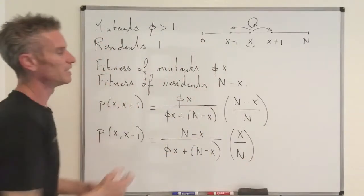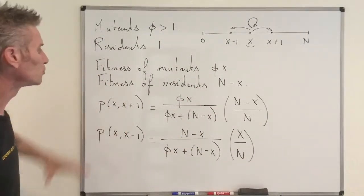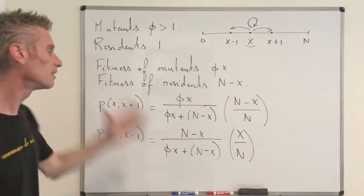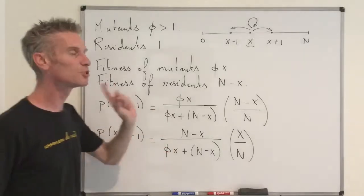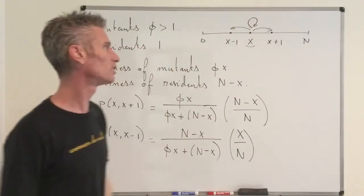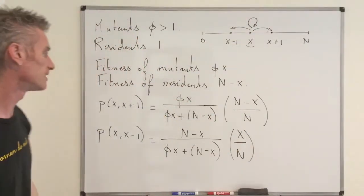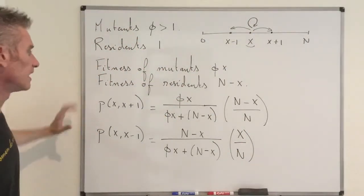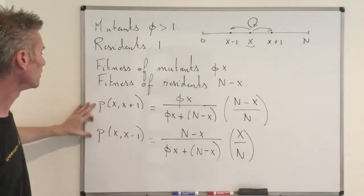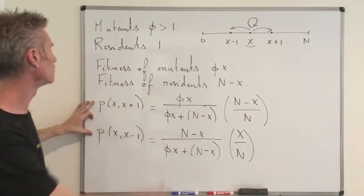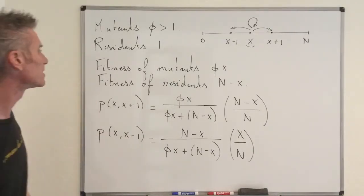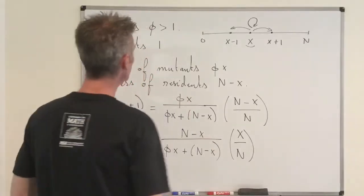Similarly, the probability of going from X to X-1: choose a resident for reproduction, probability (N-X)/(phi*X + N-X), then the resident offspring replaces a mutant, probability X/N. So P(X→X-1) = [(N-X)/(phi*X + N-X)] * [X/N]. Note that these two probabilities do not add up to one — there is a third transition where you stay at X, with probability P(X,X) = 1 minus the sum of those two.